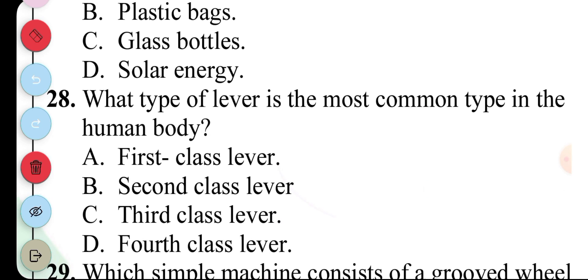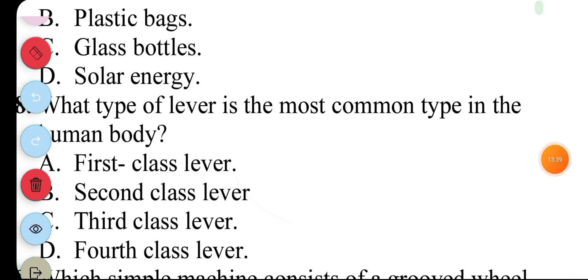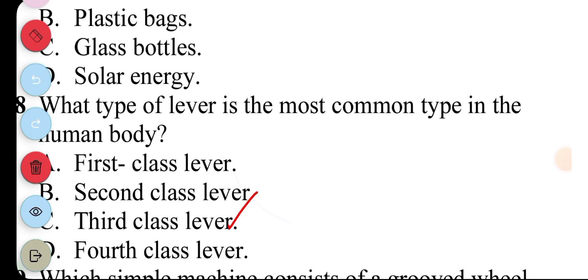Question 28. What type of lever is the most common type in the human body? A. First class lever, B. Second class lever, C. Third class lever, D. Fourth class lever. The answer to question 28 is C. Third class lever.